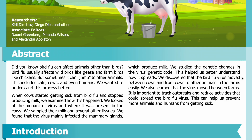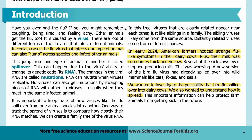We studied the genetic changes in the virus's genetic code, which helped us better understand how it spreads. We discovered that the bird flu virus moved between cows and from cows to other animals on the farms easily. We also learned that the virus moved between farms. It is important to track outbreaks and reduce activities that could spread the bird flu virus, to help prevent more animals and humans from getting sick.